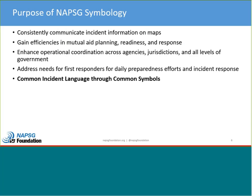The purpose of NABSIG symbology is to consistently communicate incident information on maps, to gain efficiencies in mutual aid planning, readiness, and response, and to enhance operational coordination across the entire community. It addresses the needs of the first responder community in their daily preparedness efforts and incident response. In short, it's to have a common incident language through common symbols.